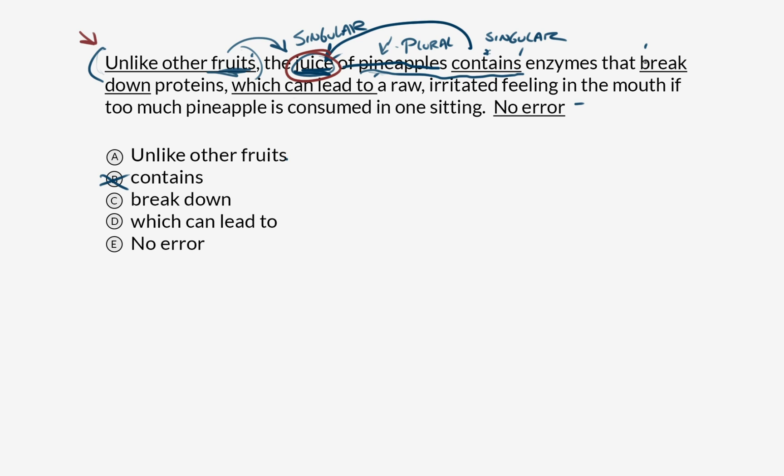Let's move through the rest of the options and see what they look like. Alright, we've got break down proteins. Break down, what's doing the breaking? Enzymes. This is a plural noun, this is a plural conjugation. I know it's very strange that there's an S at the end of this plural thing and no S at the end of this plural verb conjugation. That's just a weird and frustrating thing about English.